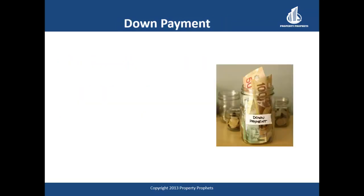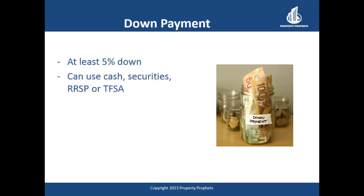Let's begin with down payments. As a homeowner in today's lending environment for an owner-occupied property — one that you live in — you can put down as little as 5% down. This is 5% of the purchase price and must come from cash you have in the bank, from an RRSP or TFSA — with rules and regulations surrounding that — or from other liquid investments. Lenders like to see a clear paper trail and prefer when the money has sat in your bank account for at least 90 days.